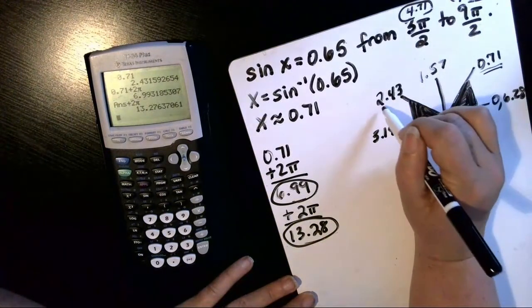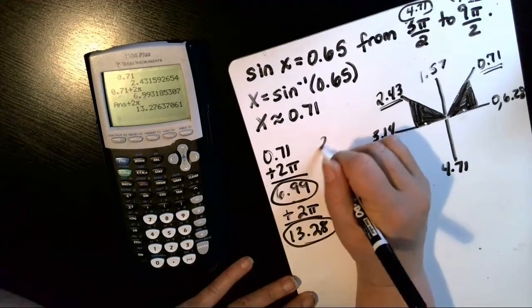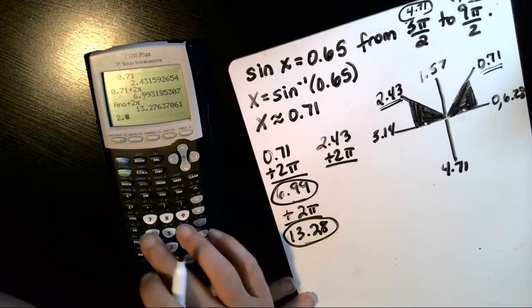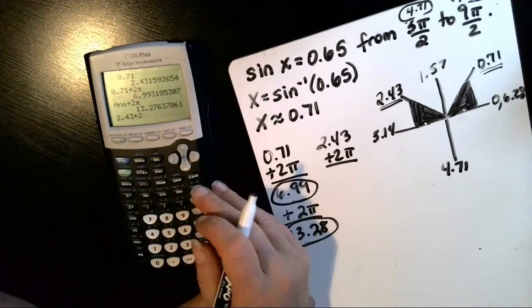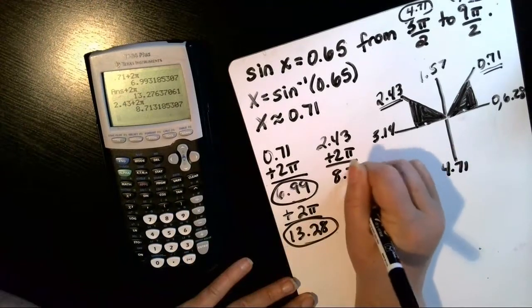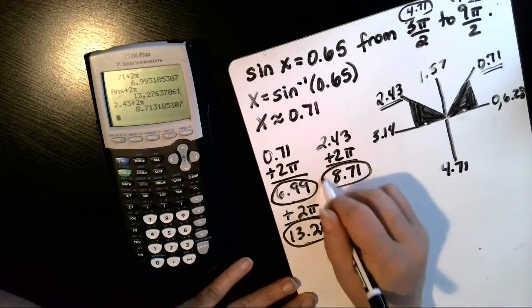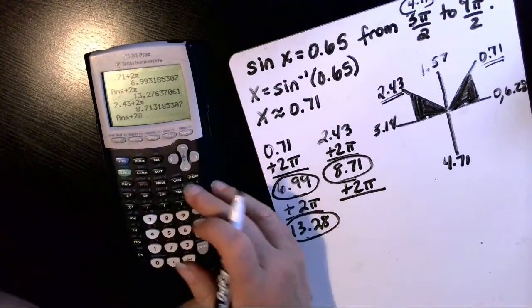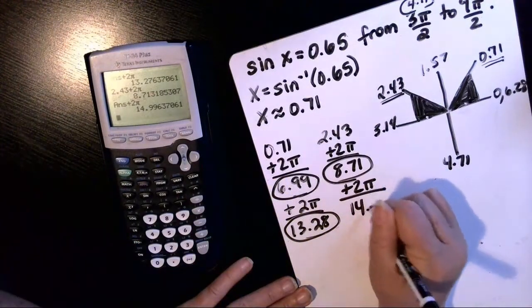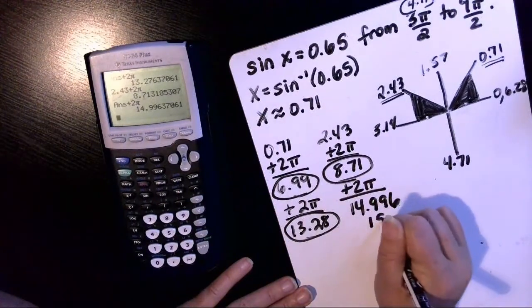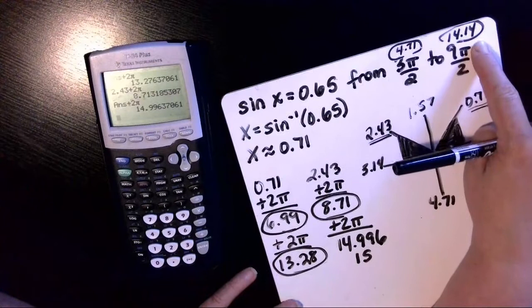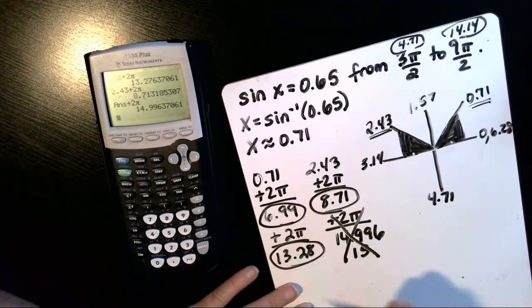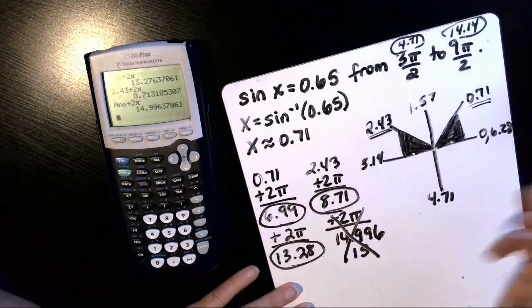Now we're going to do the same thing for our quadrant 2 angle. We'll start with that 2.43 and add a lap around the circle to get a coterminal angle. So 2.43 plus 2 pi is 8.71. Okay, that would be in the range that we want. If we add another 2 pi, then we have 14.996, which is about 15. And that's bigger than our range of 14.14. So that one we toss out, and these would be the three angles that are within that range.